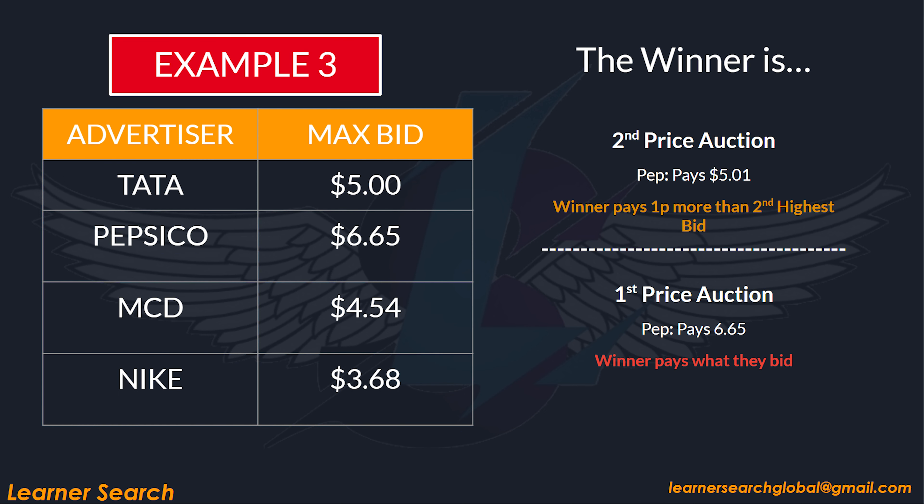Moving on to Example 3, where the winner is PepsiCo. The clearing price in the second price auction hits $5.01, whereas in the first price auction it's higher at $6.65.